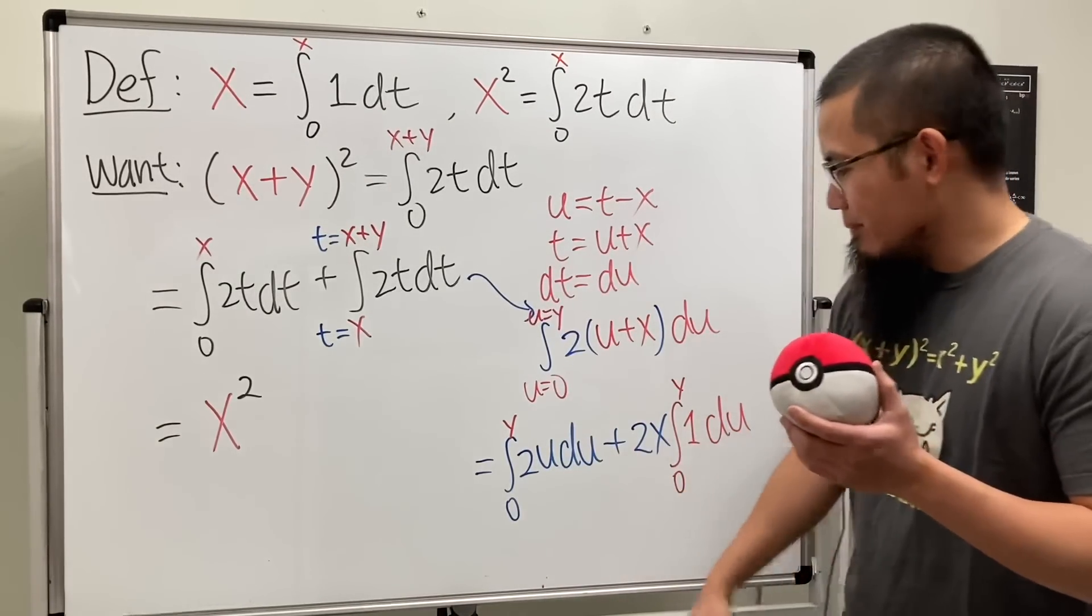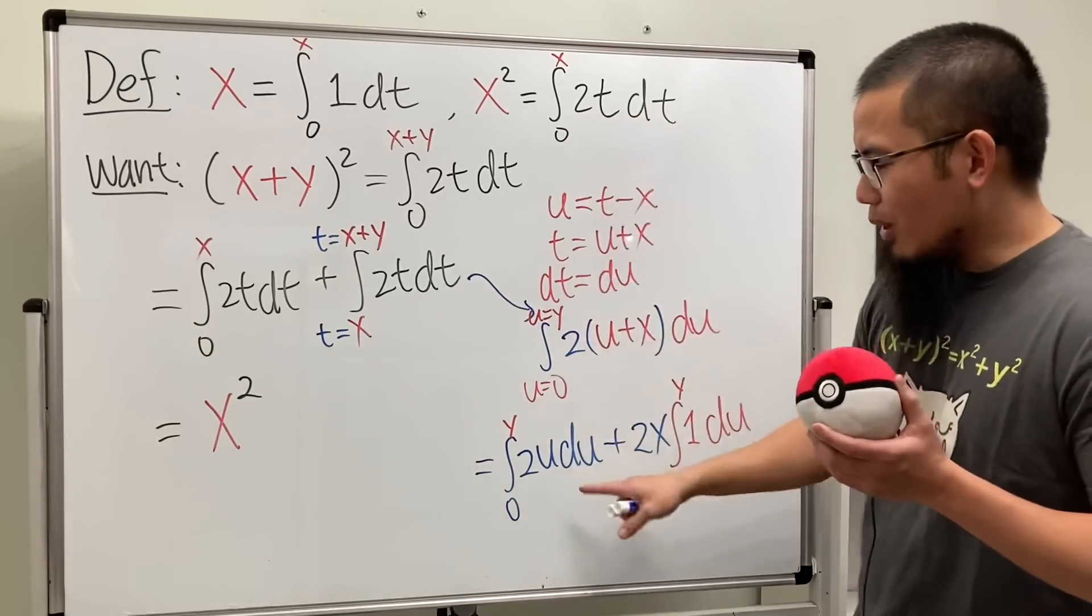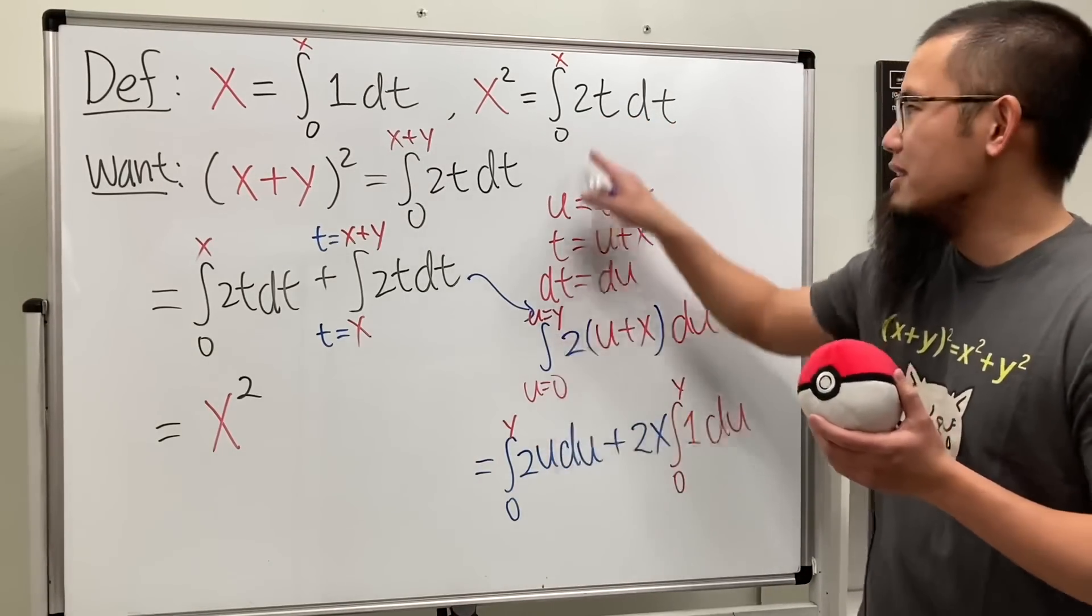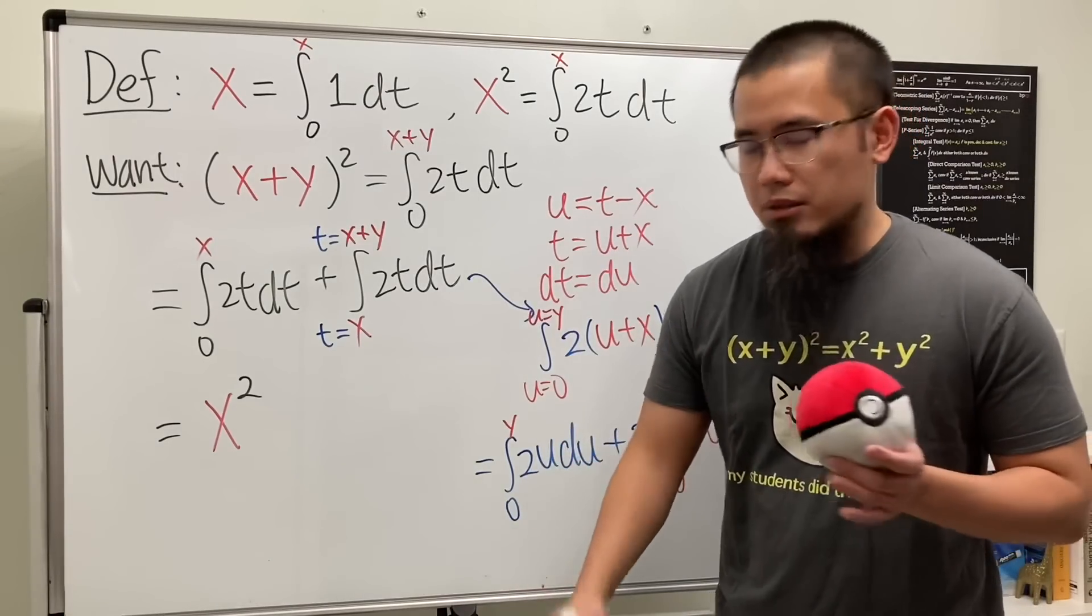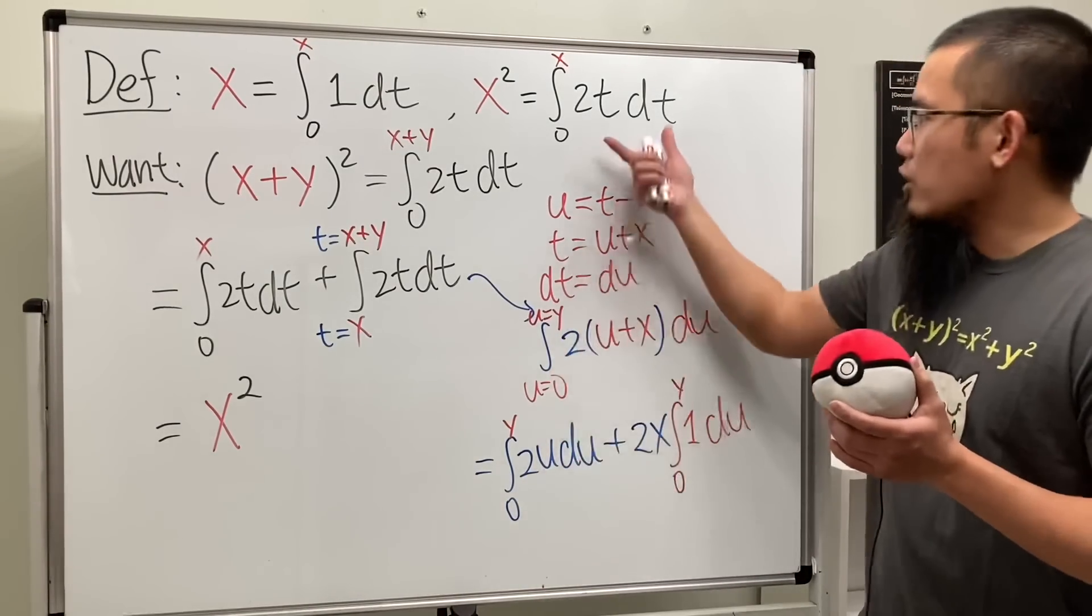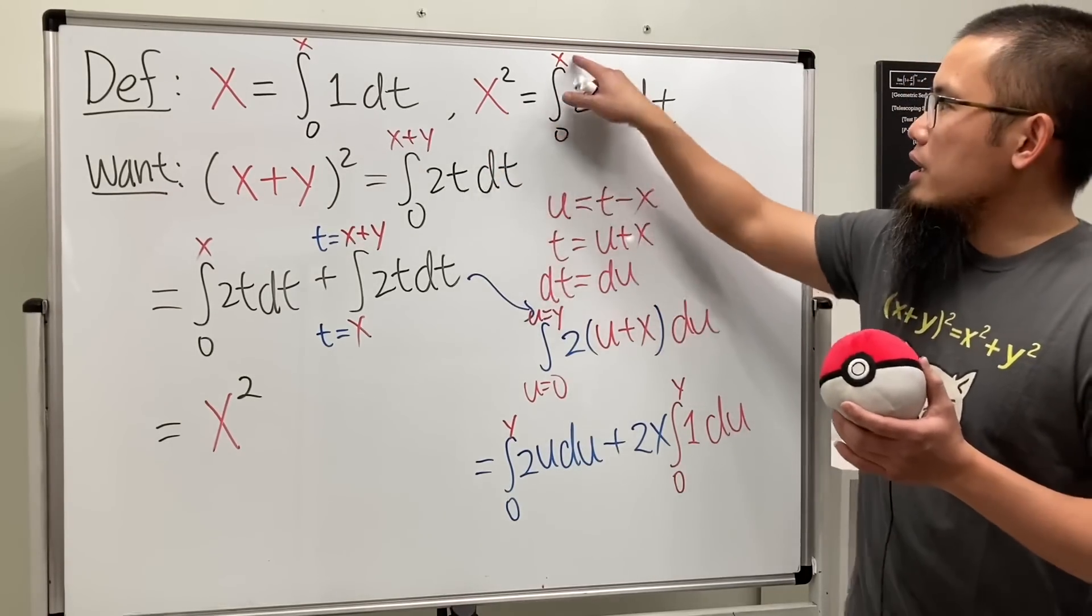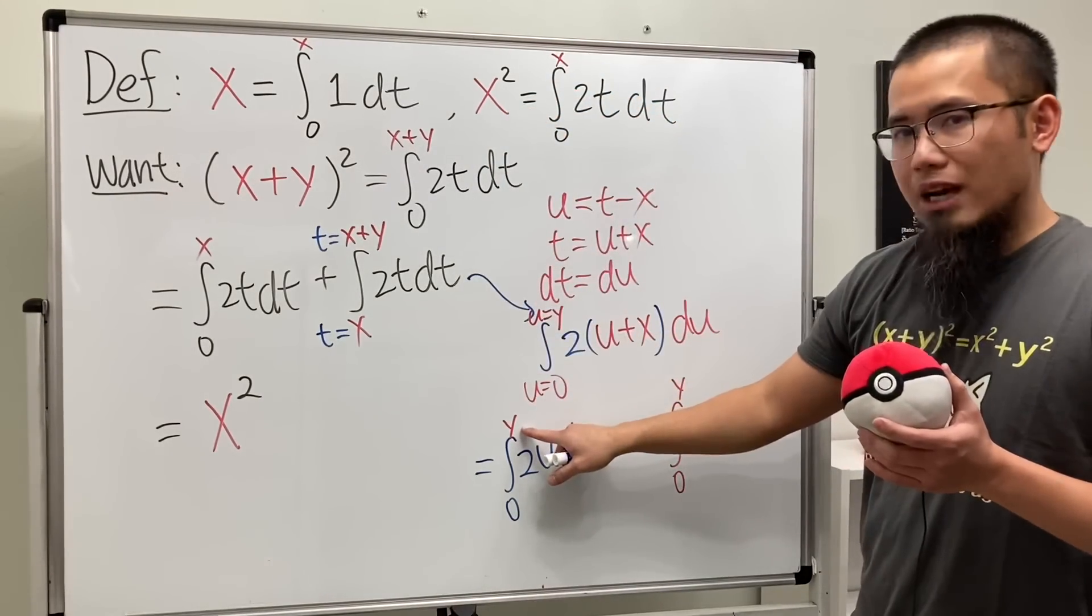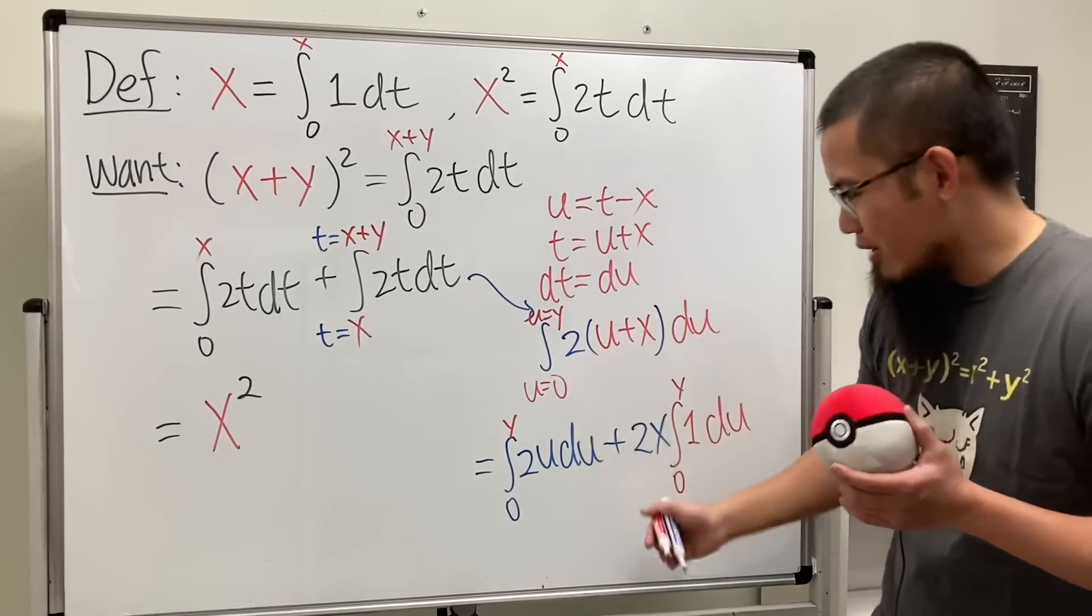Now, ladies and gentlemen, this part is the same as this part. Even though I know we have a u here, and this is the t. But they are called the dummy variables, meaning that they don't matter. As long as the structures are the same, we know the answer is going to be like this. Here, we have x. But here, we have y. Therefore, this right here is y². Aha!